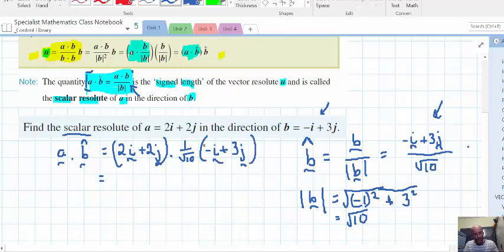All right, so basically, we need to multiply the corresponding components, as you know, of the scalar product. So we need to multiply that with that. So let's do that.